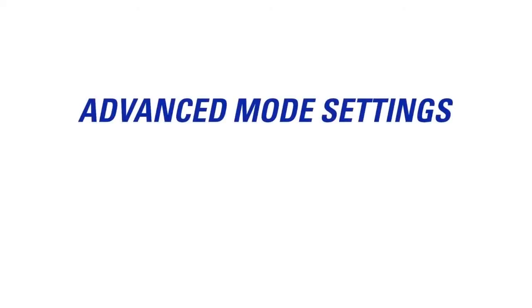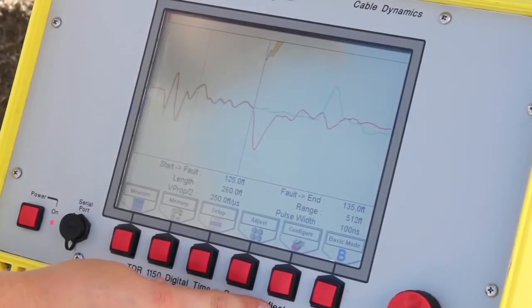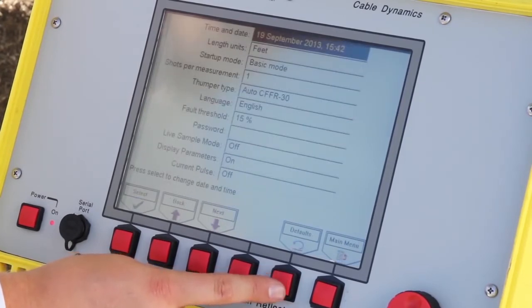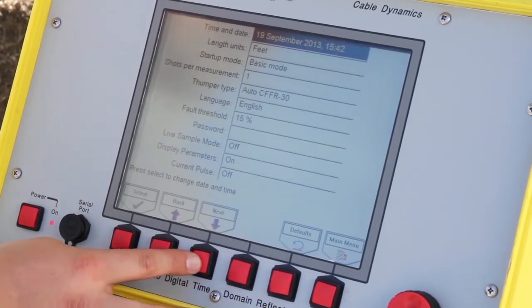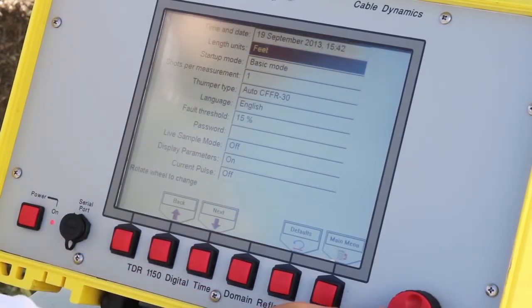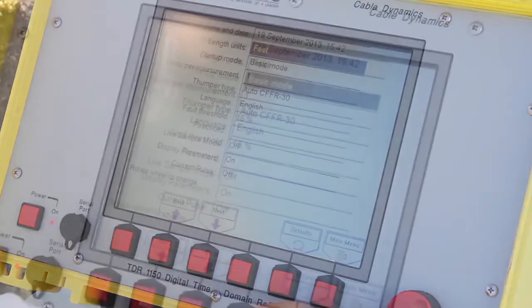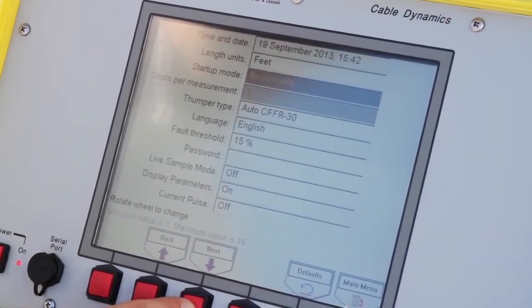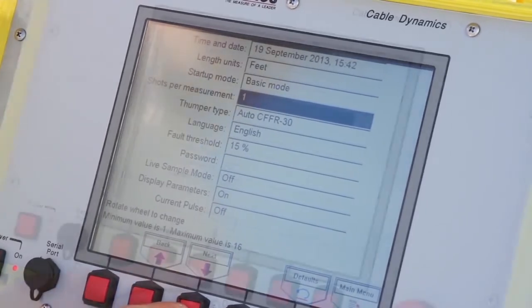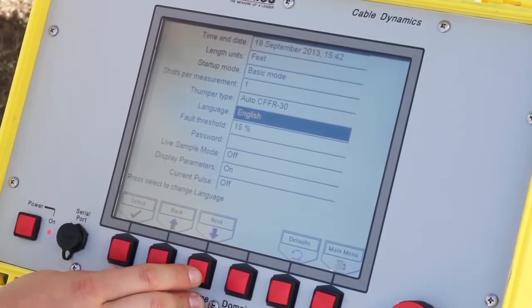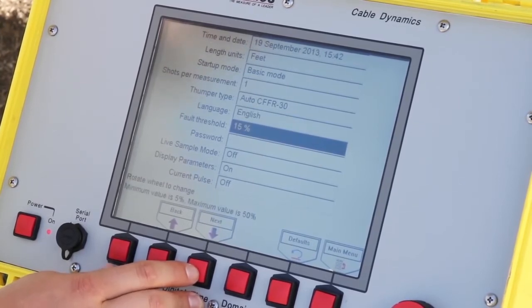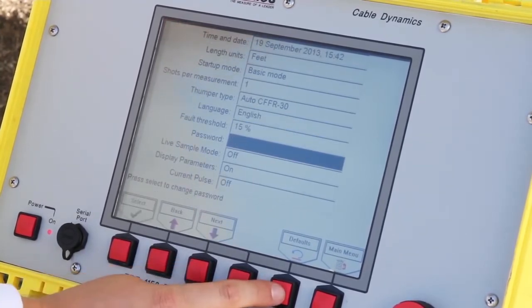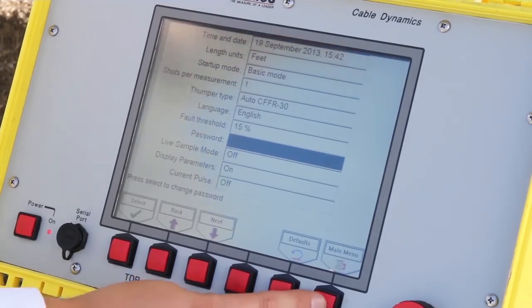Now I will give you an overview of some of the basic settings and configurations that can be made to the 5250. By pressing configure mode, you can go into the configurations that can be adjusted, such as the time and date, length of units whether it's feet or meters or yards, the setup mode for when the TDR starts in either basic mode or advanced mode, the shots per measurement should be one, the thumper type can be selected as well, language would be English. The remaining configurations do not have to be changed. If they do happen to be changed, they can be reset by pressing defaults, which will reload the pre-installed factory defaults.